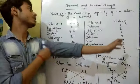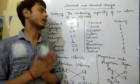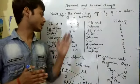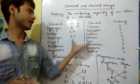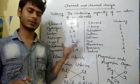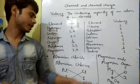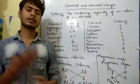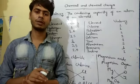This is the combining capacity of an element — valency. Now your work is to learn the valencies of the elements listed and then make some chemical formulas using them. Thanks for watching my videos.